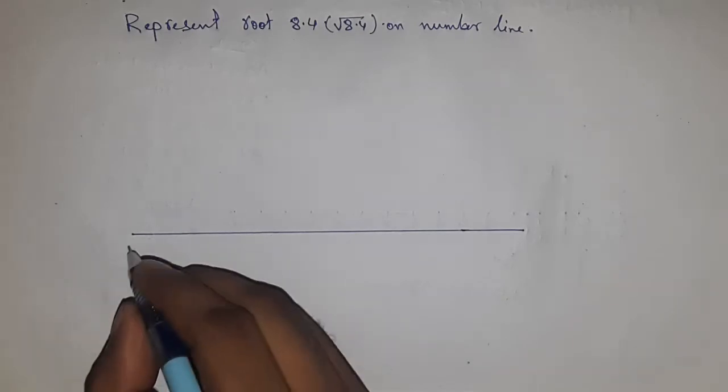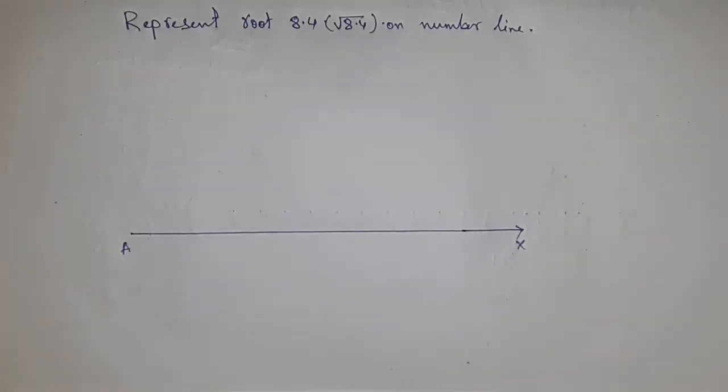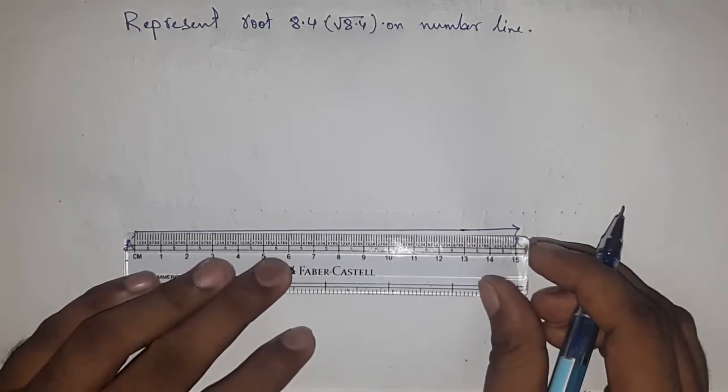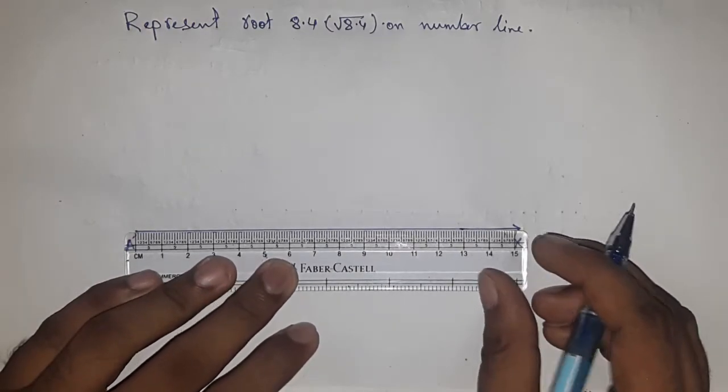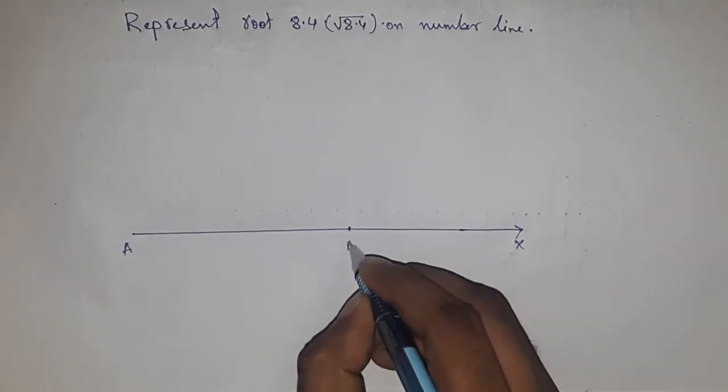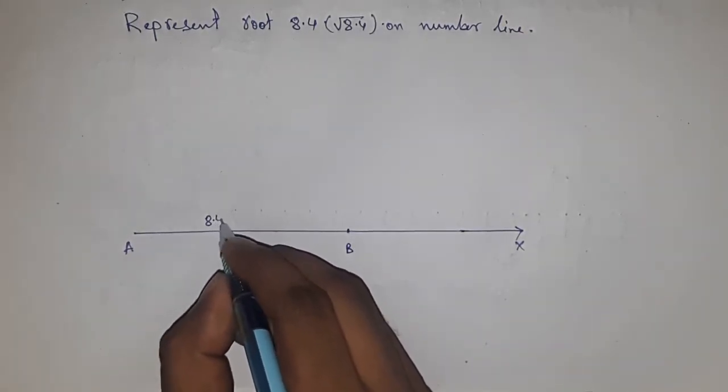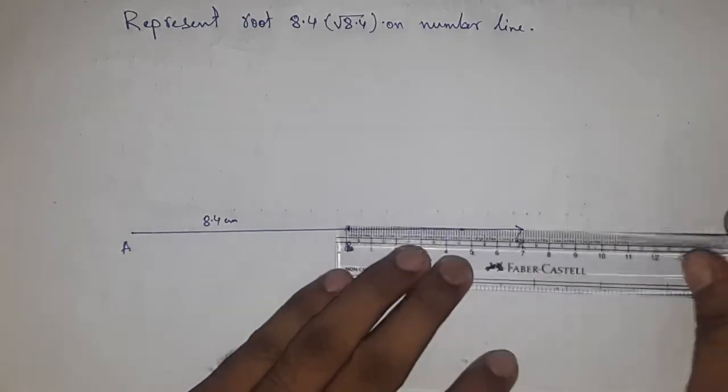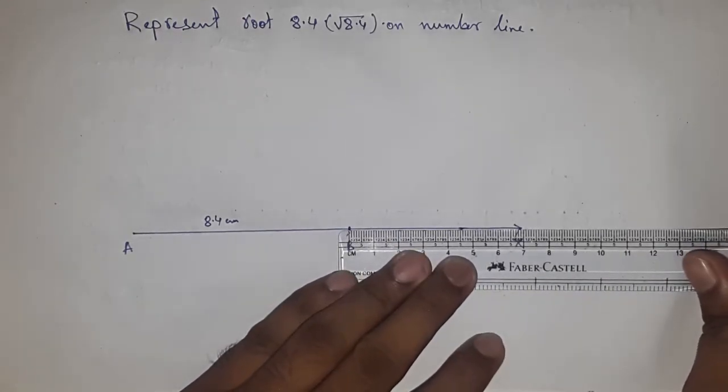First, drawing a line of any length, and this is the AX line. Next, we take a length of 8.4 cm, so this is 8.4 cm. This is point B, so AB is 8.4 cm.